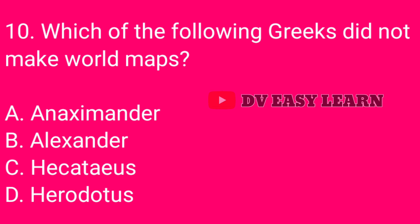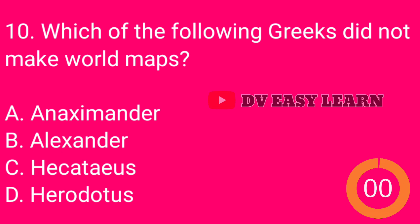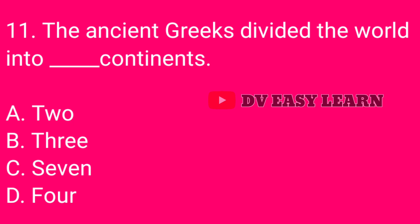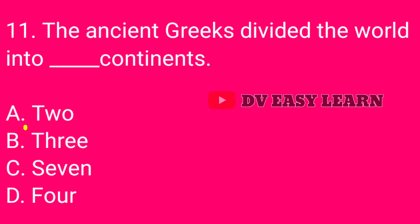Question number 10: Which of the following Greeks did not make world maps? Correct answer: Alexander. Question number 11: The ancient Greeks divided the world into dash continents. Correct answer: Europe.